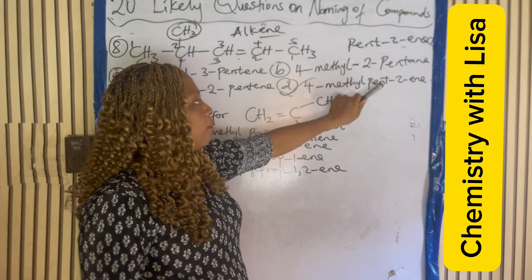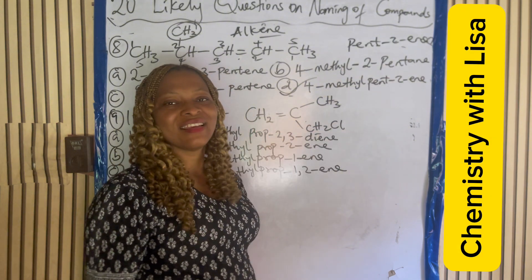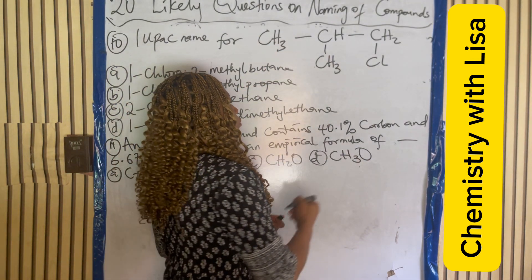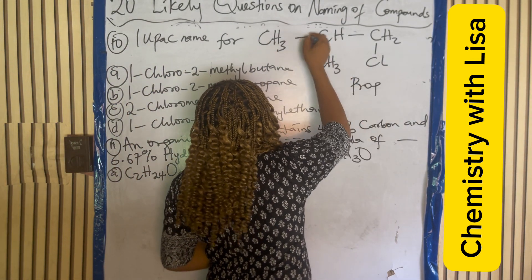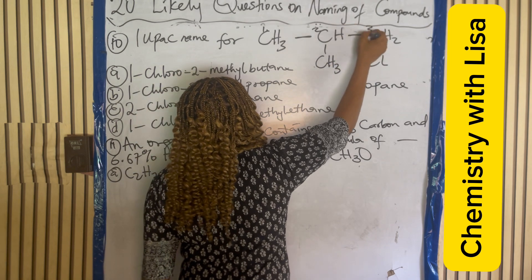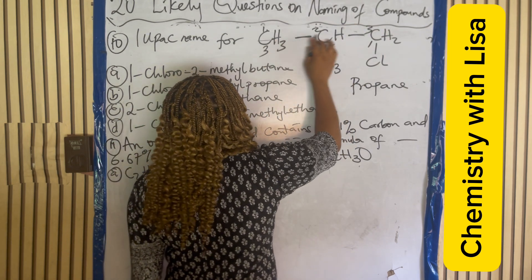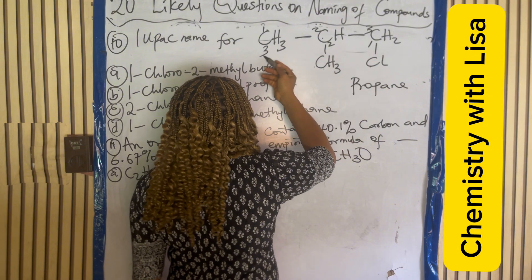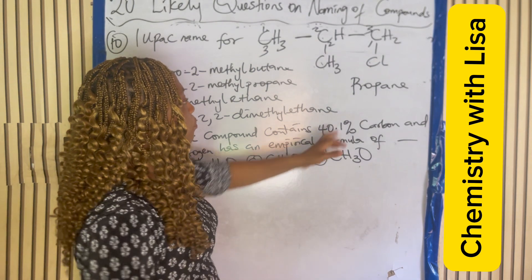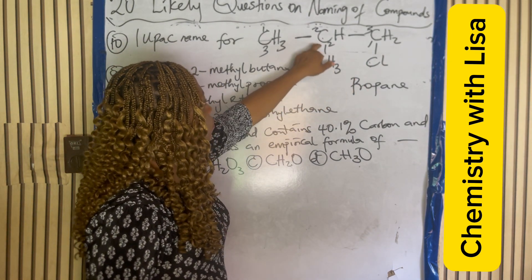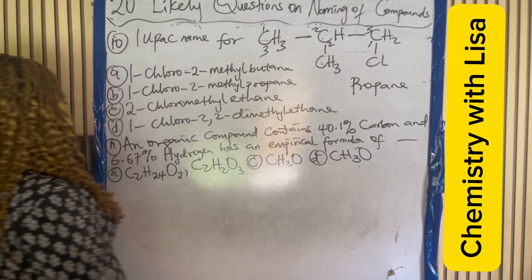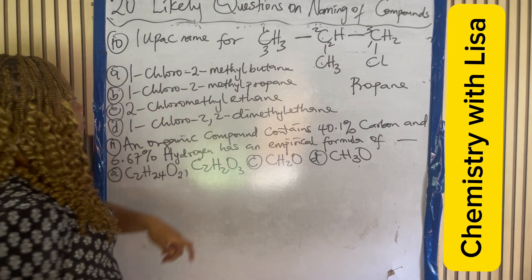For the next compound, one, two, three carbons — that is 'prop' — and there are no double or triple bonds, so it is the alkane family: propane. Numbering for least position: from one side it is 2-methyl-3-chloro, from the other side it is 1-chloro-2-methyl. One, two is lower than two, three, so the answer is 1-chloro-2-methylpropane, answer B.